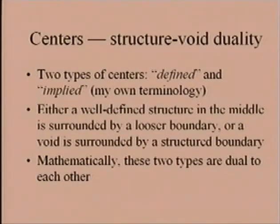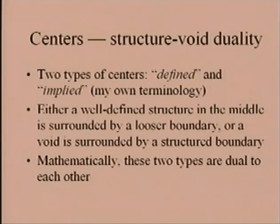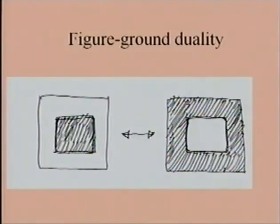I'm going to define two different types of centers. One is a defined center and the other is an implied center. Either I have a well-defined structure in the middle of some region — obviously a center because it has a point in the middle with a looser boundary — or an implied center, where there is nothing in the middle but a structured boundary focuses on the middle. Mathematically these two types are dual to each other — I refer to this as structure-void duality. Architects will recognize this as figure-ground duality.